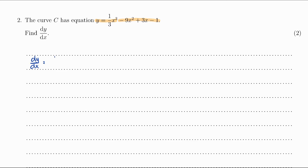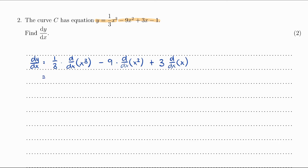This is the same as one third multiplied by the derivative of x cubed, plus the derivative of negative 9x², which is negative 9 multiplied by the derivative of x², plus 3 multiplied by the derivative of x, plus the derivative of negative 1. The derivative of any constant is 0, so we don't write that. For the first term, using the power rule we bring 3 to the front and subtract 1 from the power, giving x².